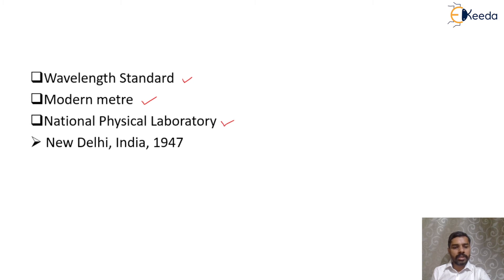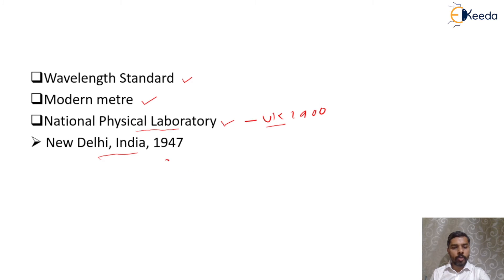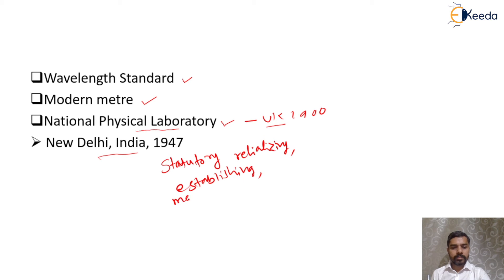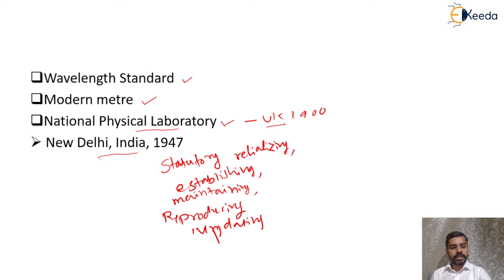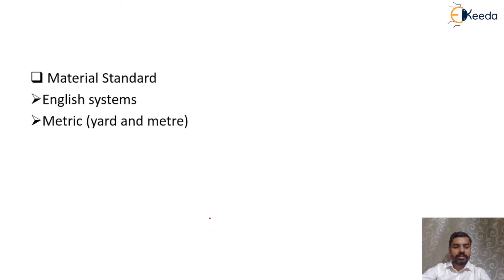The National Physical Laboratory was established in the UK in 1900. It is a public institution for establishing and standardizing various instruments, testing materials, and determining physical constants. Similarly, a national physical laboratory was developed in India in 1947. The role of these laboratories includes: statutory application over realizing, establishing, maintaining, reproducing, updating national standards of measurement, and providing calibration facilities for different parameters.